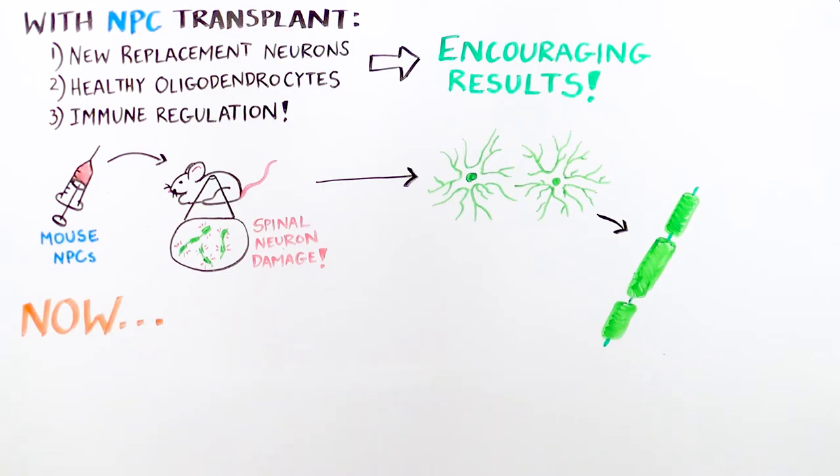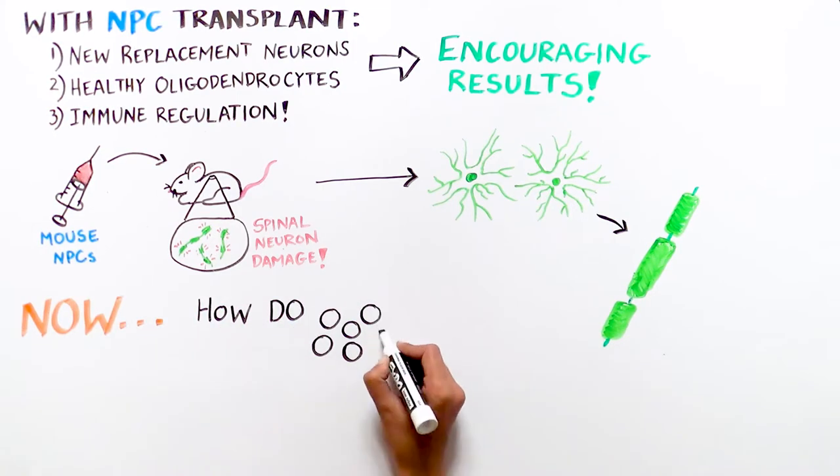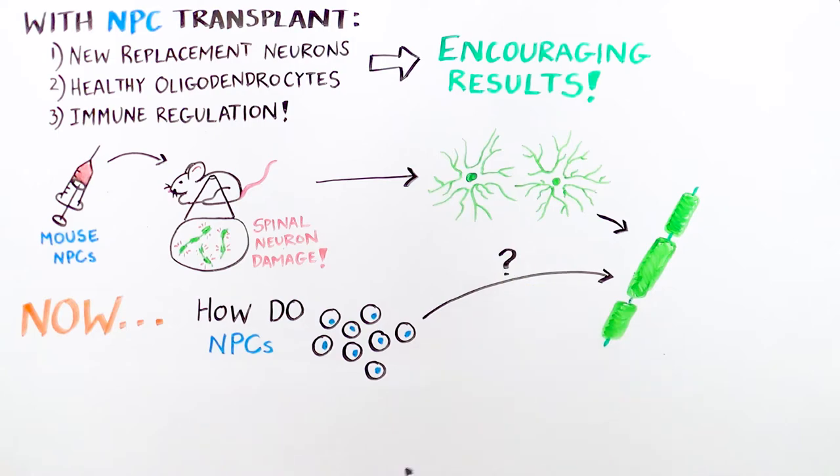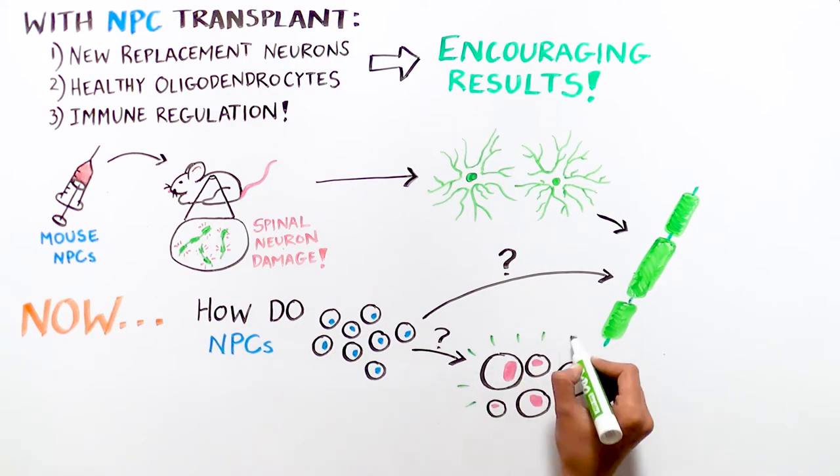The scientists are now hard at work trying to figure out how exactly NPCs help repair damaged neurons and boost the immune system, and to use this information to design new therapies for MS.